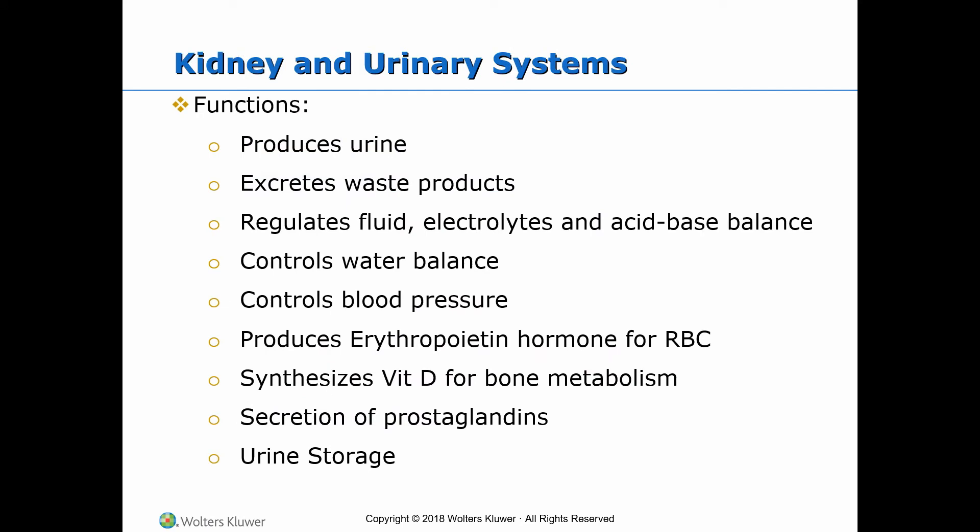Functions of the urinary system. First, production of urine. Urine is normally clear and straw-colored. Urine output must be at least 30 mL per hour, or to be exact, 0.5 to 1.5 mL per kilogram per hour. A person must normally void at least every six hours. Foul-smelling urine, also called malodorous or cloudy urine, may indicate infection.